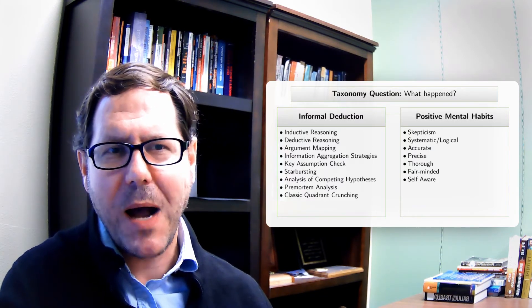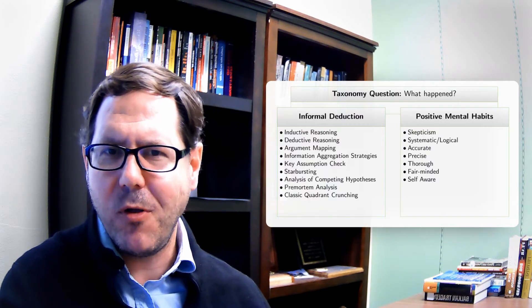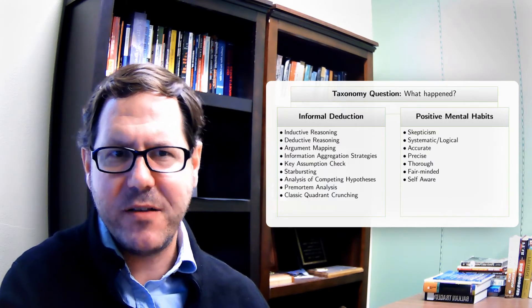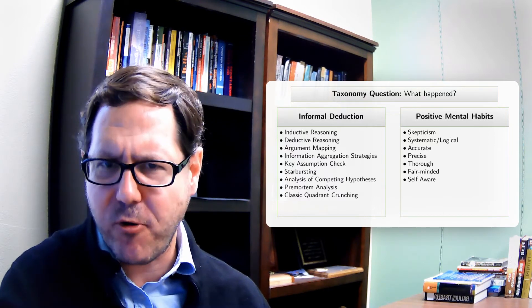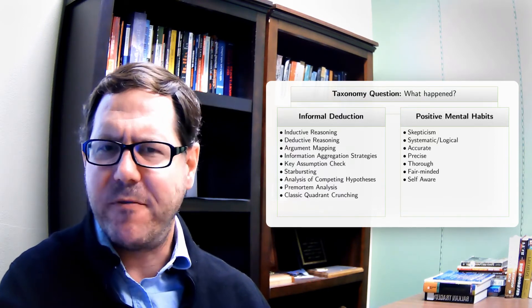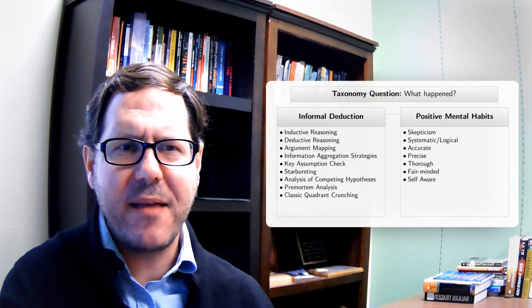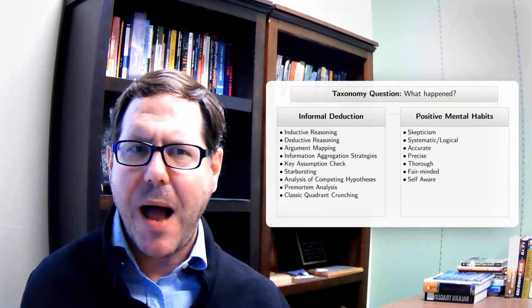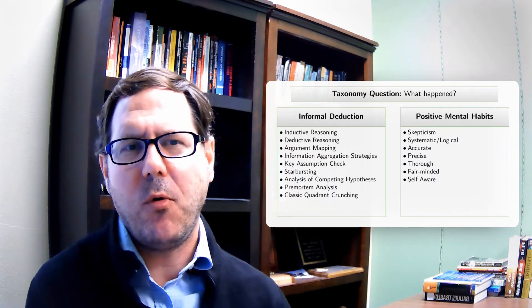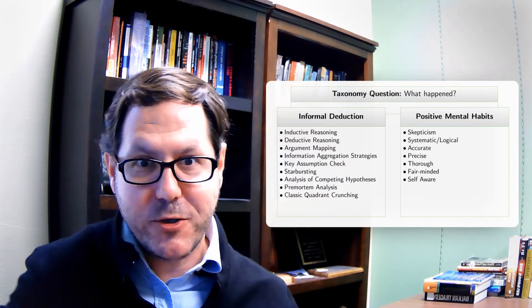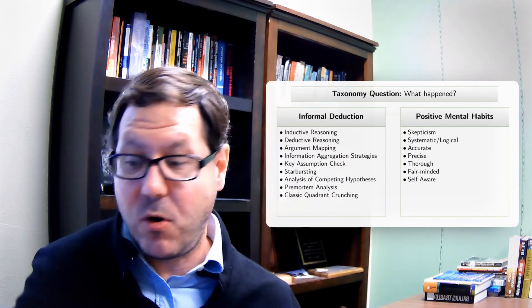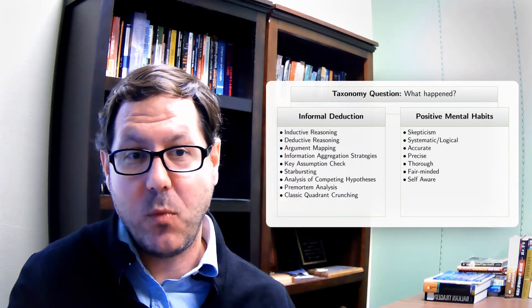When we're thinking about the positive mental habits that we're bringing to the table, we want to be skeptical about evidence. We want to be accurate and think about precision. We want to be thorough, working through everything. We want to be fair-minded in terms of how we're weighing things. We want to be self-aware of our own bias. Those are reasonable positive mental habits to bring to the table when we're just trying to answer a basic question like what's the state of the world right now? What has actually happened? What is existing?